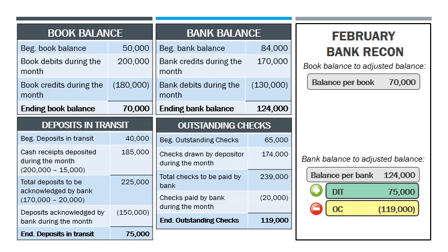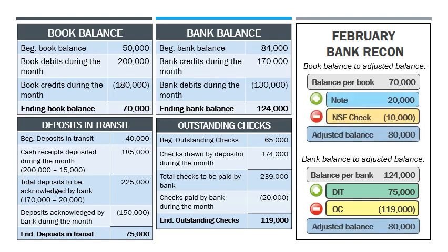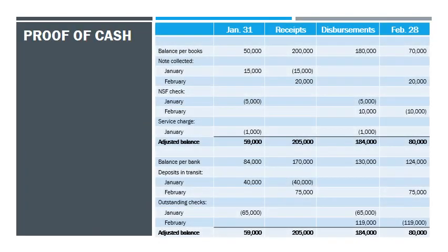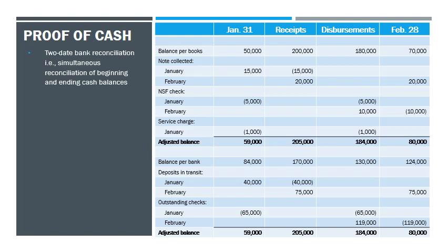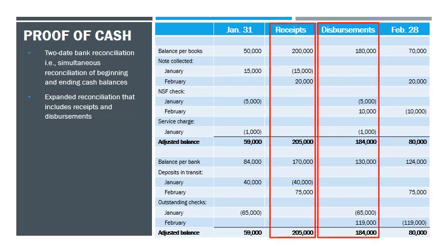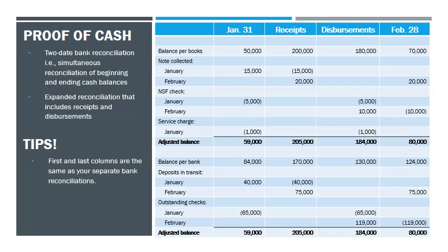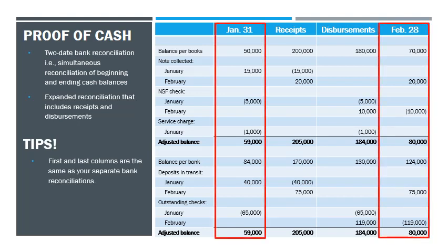Now that we have all the necessary information, we can prepare the bank reconciliation for February to arrive at the adjusted cash balance of $80,000. So far, we have prepared two separate bank reconciliations to reconcile the cash balances in January and February. Another way to do this is through the preparation of a proof of cash. Proof of cash is a simultaneous reconciliation of the cash balances of two dates — in this case, January 31 and February 28. It has four columns and is an expanded version of the usual bank reconciliation, as it includes receipts and disbursements. The first and last columns are exactly the same as the separate bank reconciliations prepared earlier.